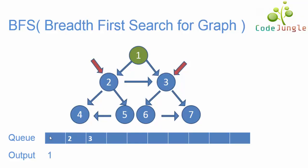At the same time, element 1 will be popped out of the queue and kept for displaying in the output. We will mark the element which has already been considered for output as visited, so it has been marked in green.